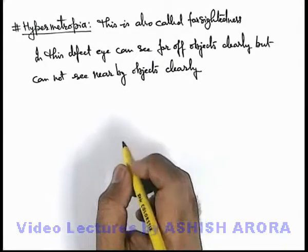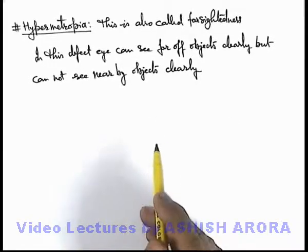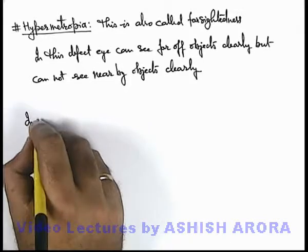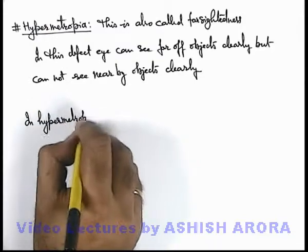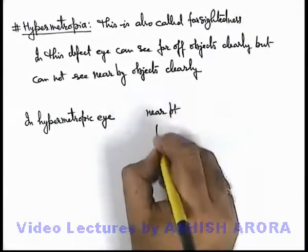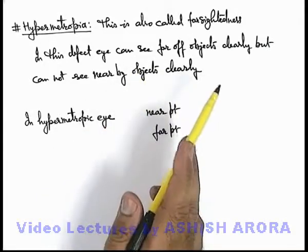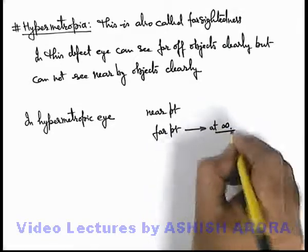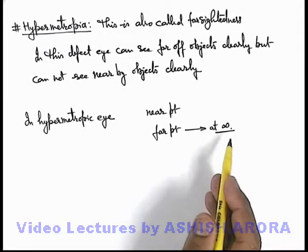As we know, a normal eye can see all objects between near point and far point clearly due to its accommodation ability. But in a hypermetropic eye, the far point is at infinity, so it is able to see all objects which are located far away from it.